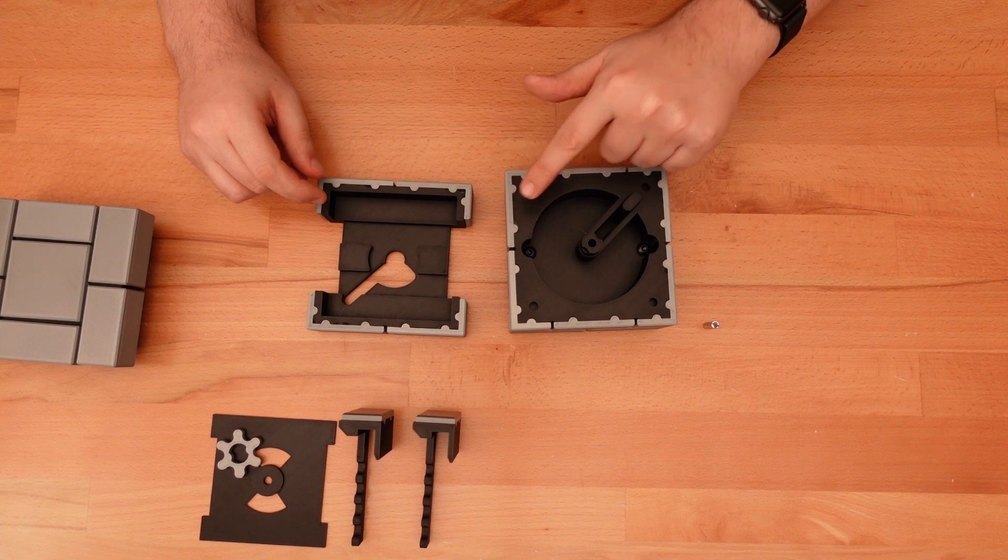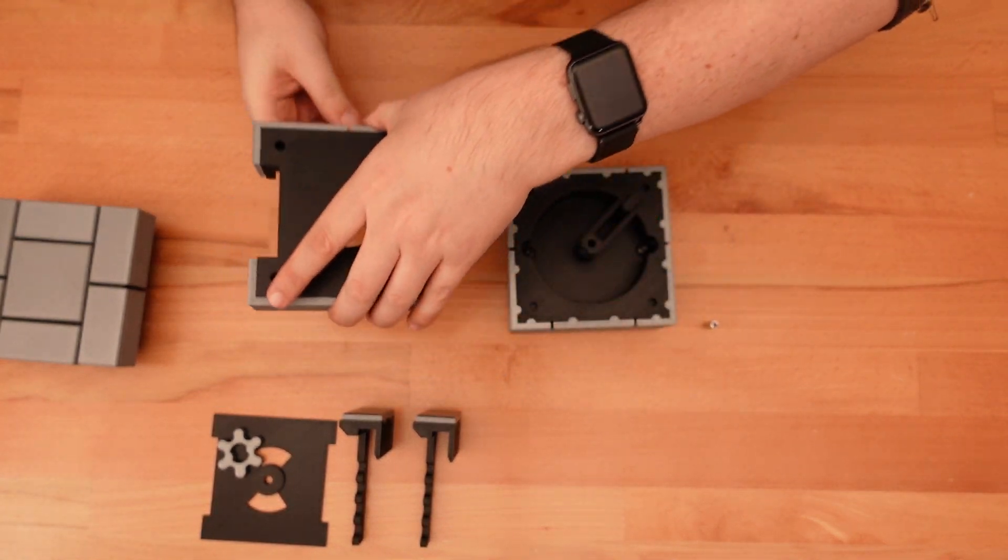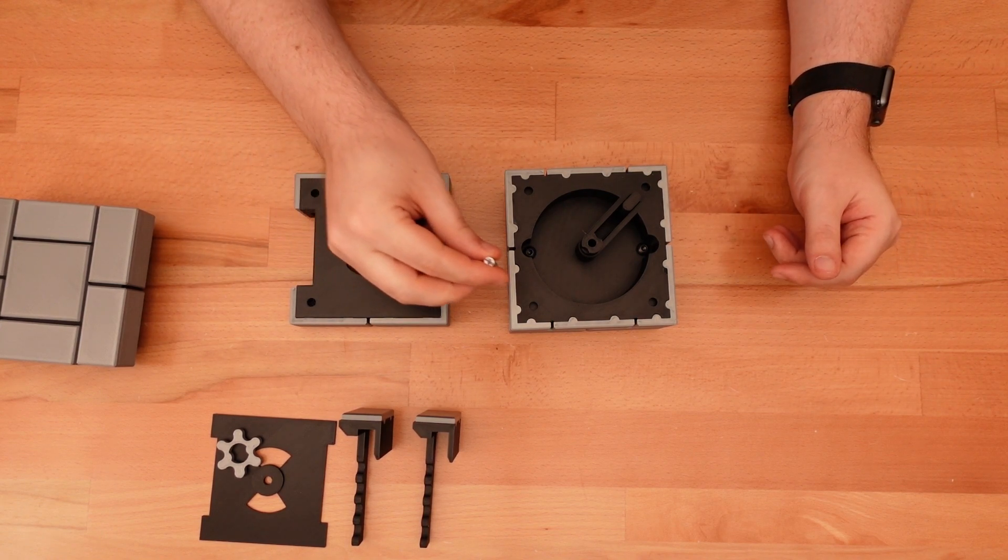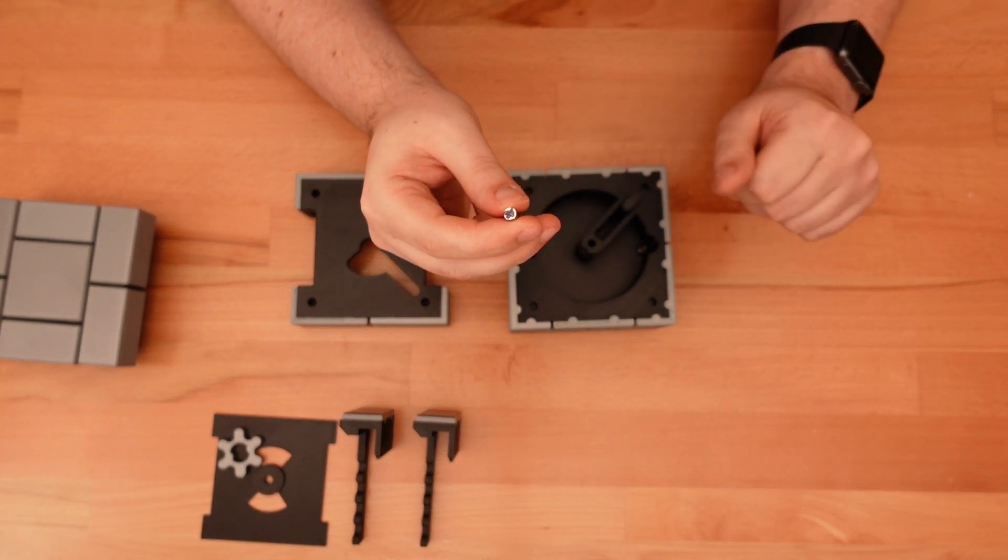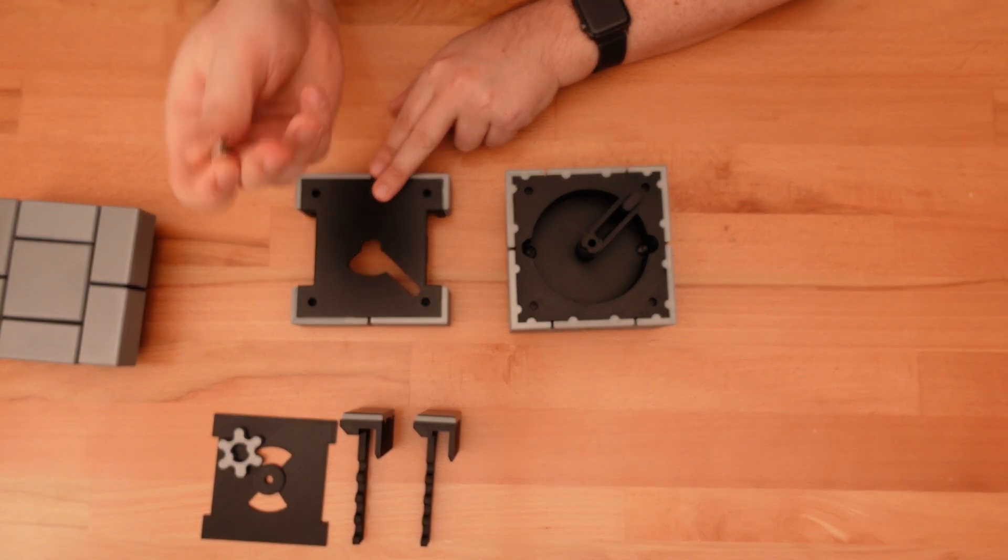There's also four magnet holes on level two that match up with four holes on the bottom of level three. As before, orientation of magnets is very important, so I'm going to glue all four magnets in level two with the marked side up. And then insert all the magnets in level three with the marked side facing down.